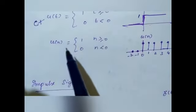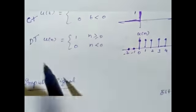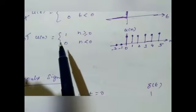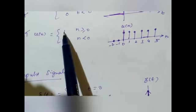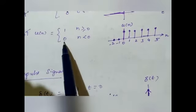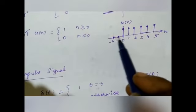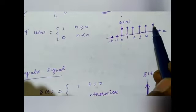The same step signal for discrete time is u(n). For a positive value of n the function value is 1, and for a negative value of n the function value is 0.